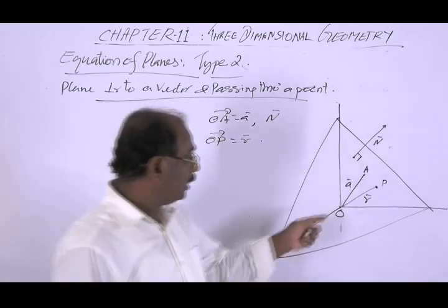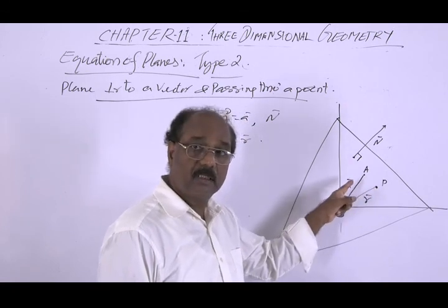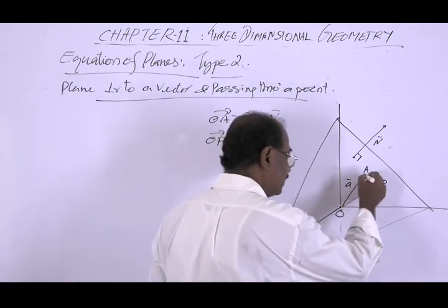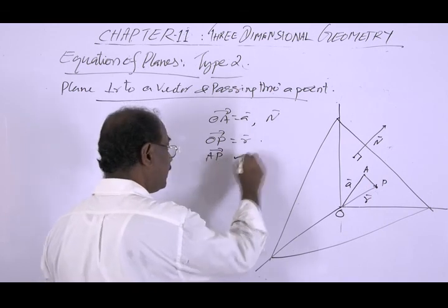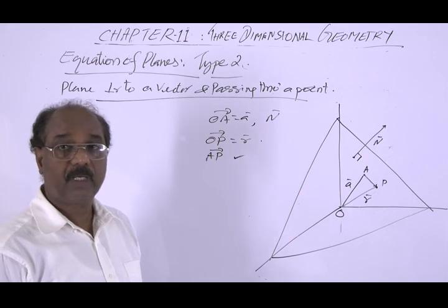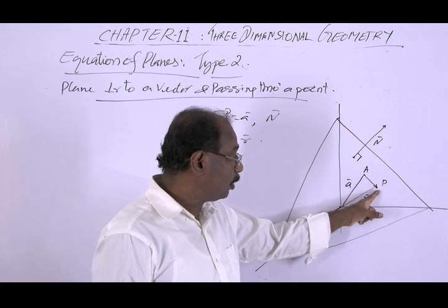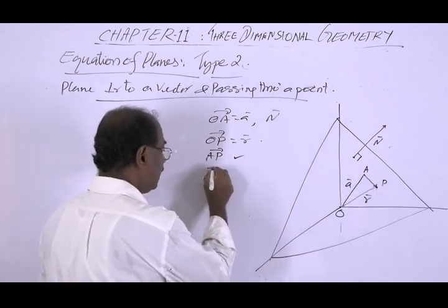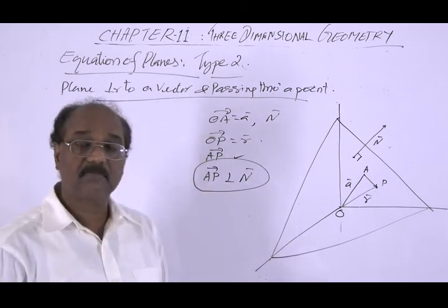Points A and P are both on the plane, so the vector AP lies in the plane. Since n is perpendicular to the plane, n is perpendicular to vector AP. That is, vector AP is perpendicular to n. This is the condition connecting P, A, and n.